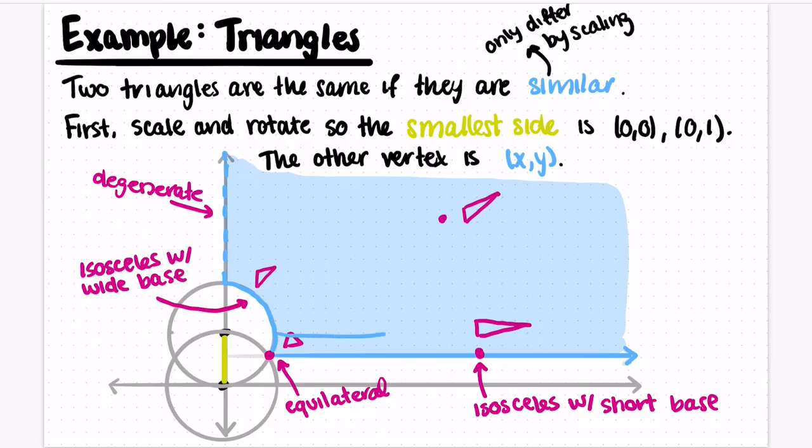And finally, let's talk about some other classes of triangles that you might be familiar with. So for example, right triangles live along this blue line. This divides the blue region into two different areas. The lower one corresponds to acute triangles, and the upper one corresponds to obtuse triangles.